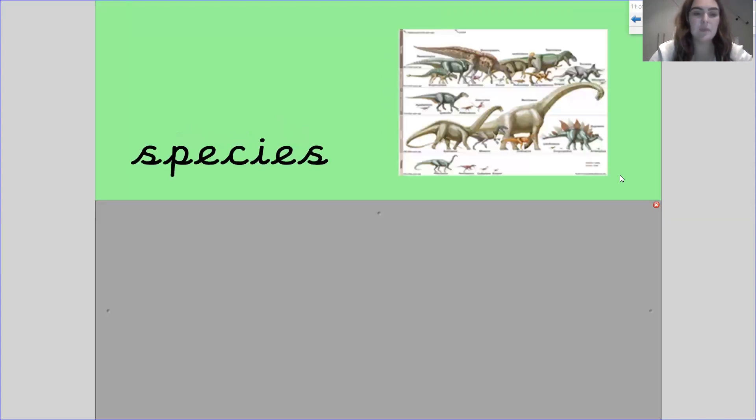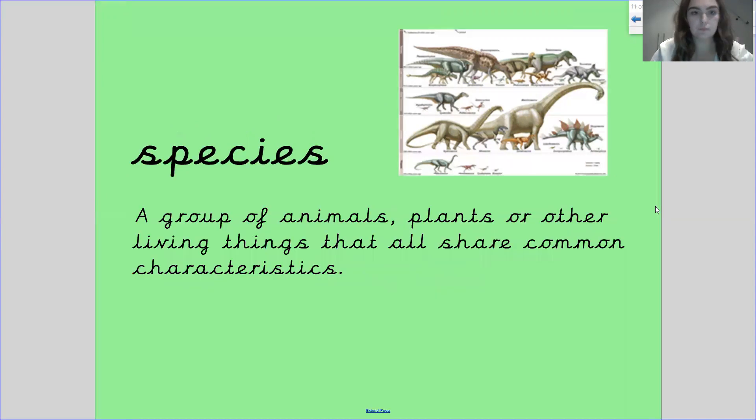Our next word is species. Our next word is species. This is a group of animals, plants or other living things that all share common characteristics.